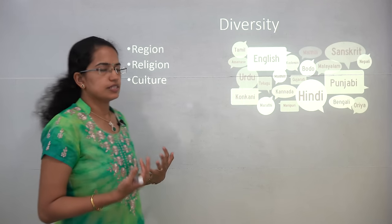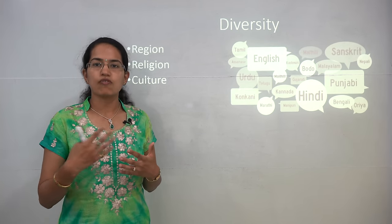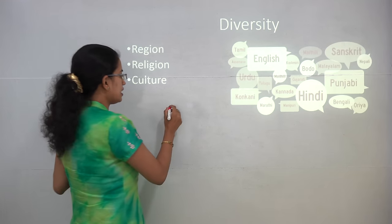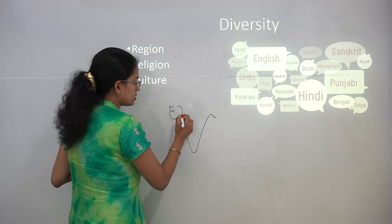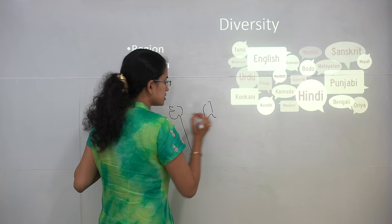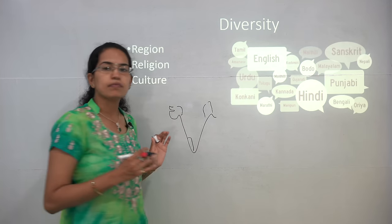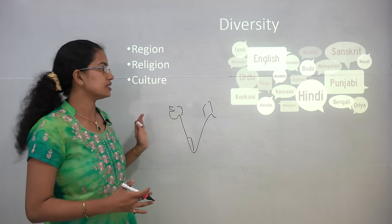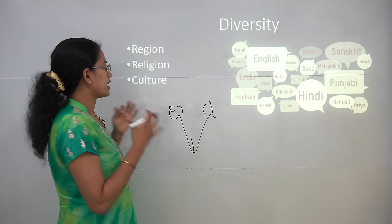Now what is diversity? Diversity occurs in terms of religion, languages, cultures, and regions. Looking at a map of India, a person in Gujarat might speak Gujarati language, a person in West Bengal would speak Bengali language, and a person in Kerala would speak Malayalam language. So that is a kind of diversity within a nation, shown through the various languages depicting that diversity.